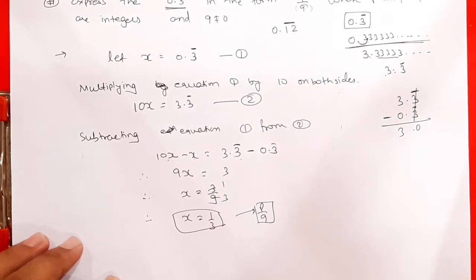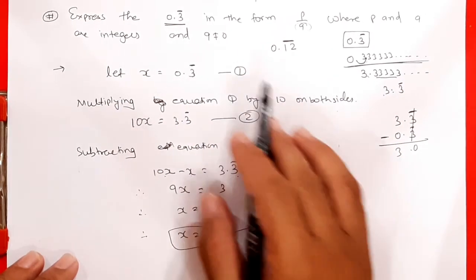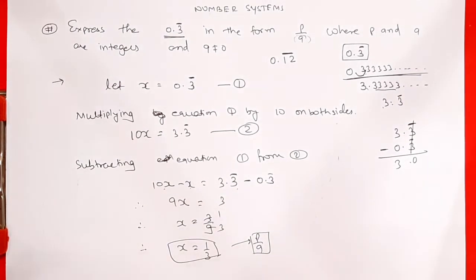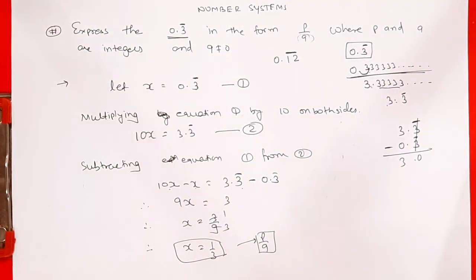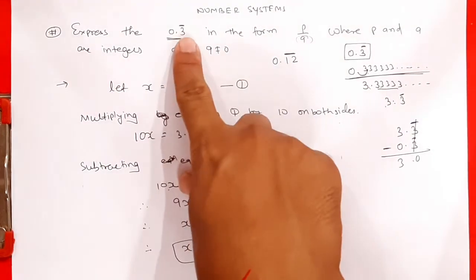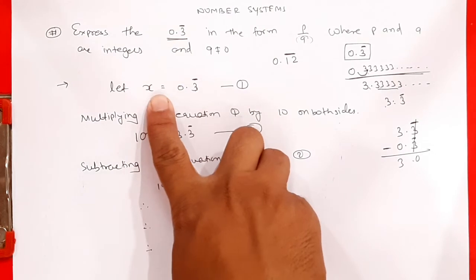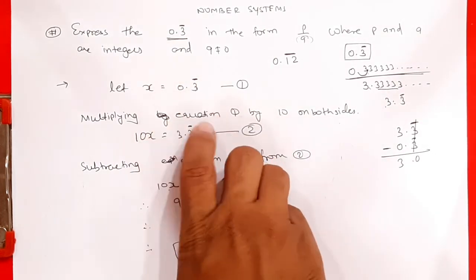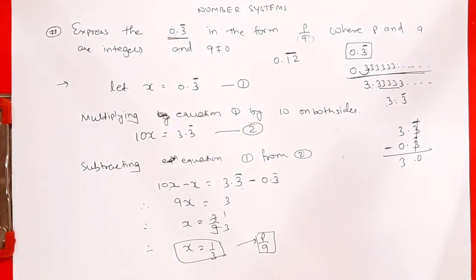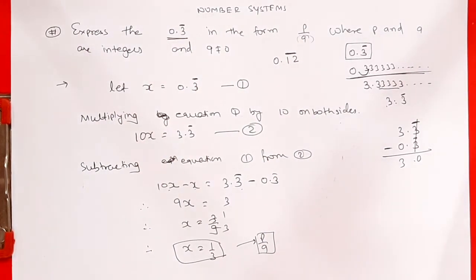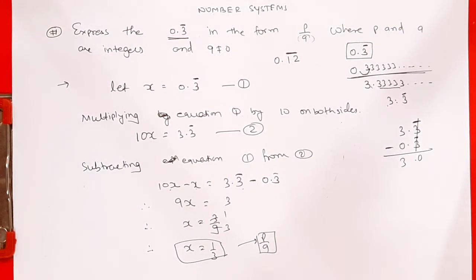Toh humne 0.3 bar ko P by Q form mein likha — answer 1 upon 3. Aise type ke questions exam mein aaye toh: pehle jo bhi number diya hai use x le lo, phir jitne digits ke upar bar hai utne zeros se dono taraf multiply karo, aur phir subtraction karke P by Q form nikalo.